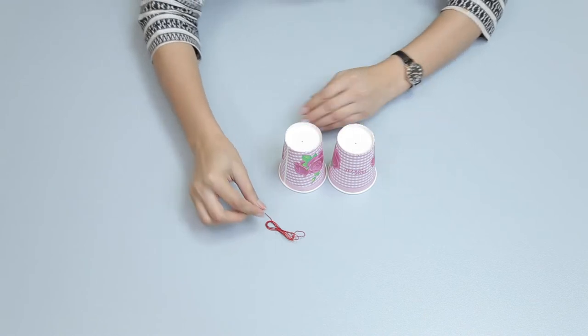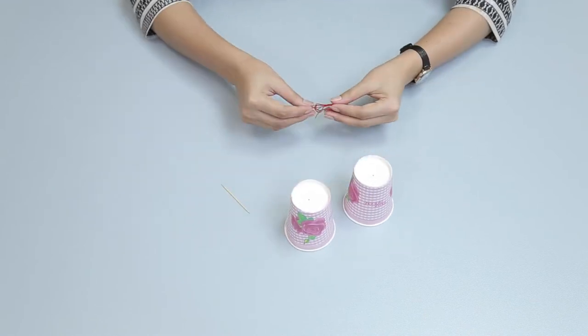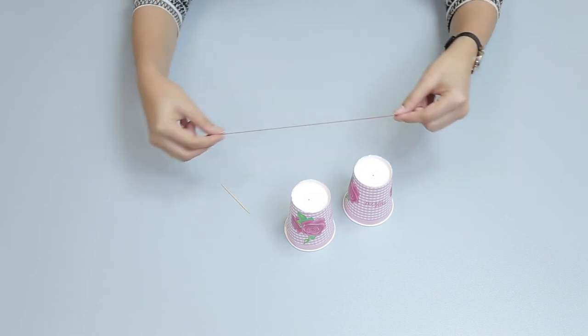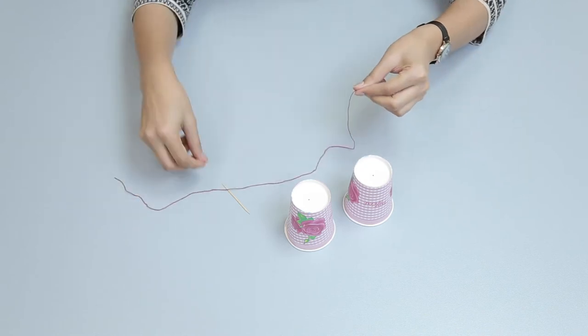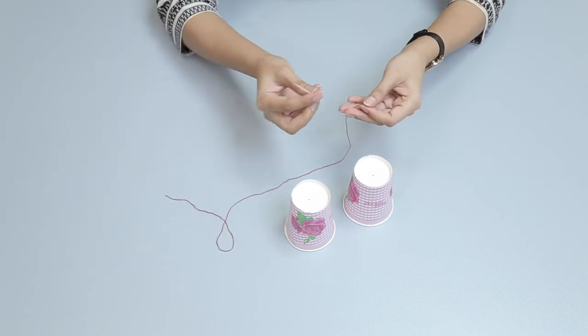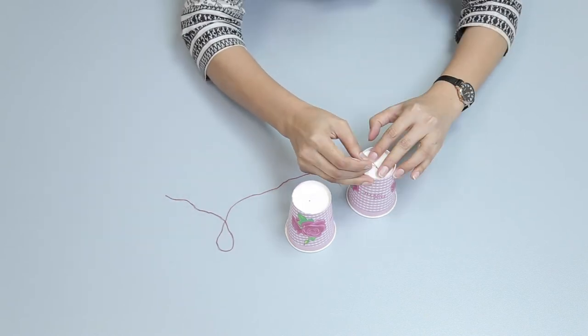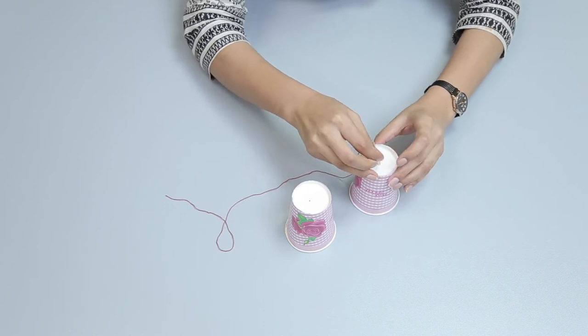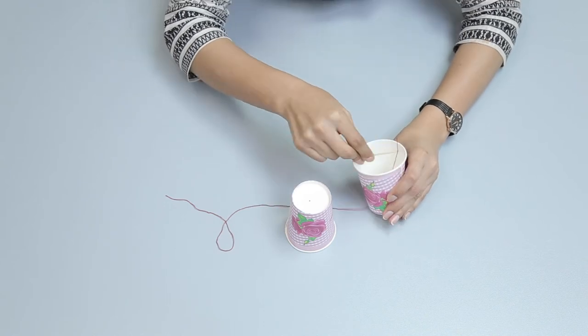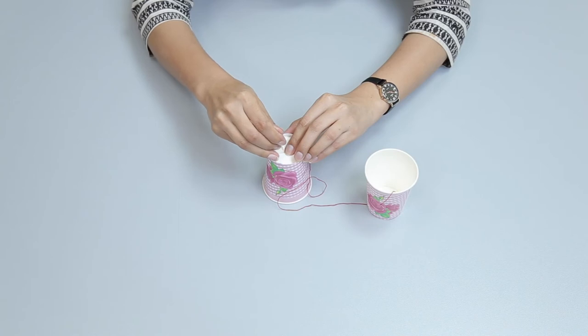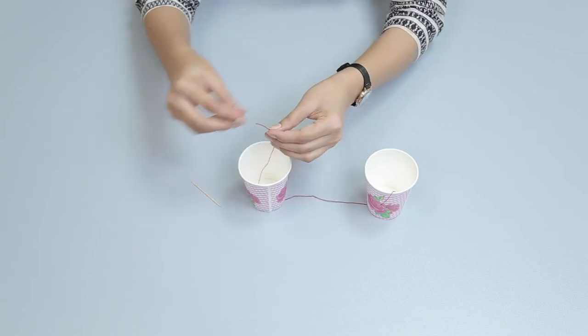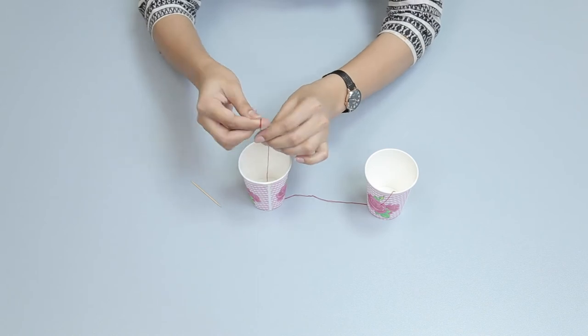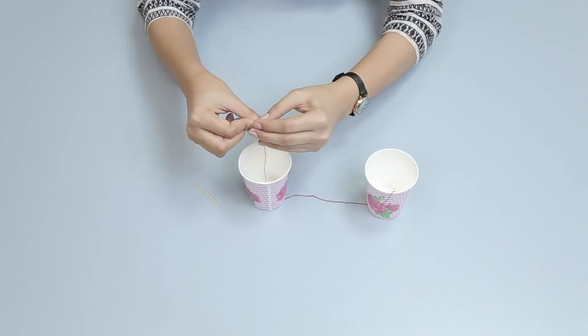Take a piece of string 40 inches long. Now thread the string through each hole and tie knots at each end to stop it pulling through the cups.